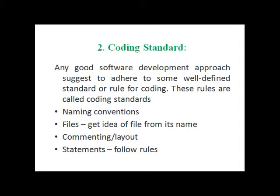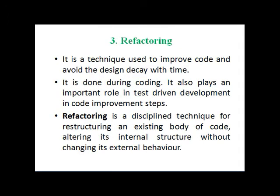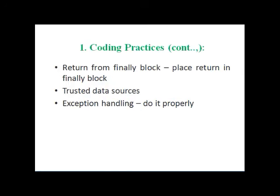Coding standards are common for all languages. The first standard is naming conventions: if you are calculating the area of a circle, your variable should reflect that — for example, naming a variable 'radius of circle.' Function names should also clearly indicate their purpose, such as 'calculate area of circle.' Files should be named so you get an idea of their content. Comments, layout, and statements should strictly follow standardization rules like ANSI, ISO, or IEEE.